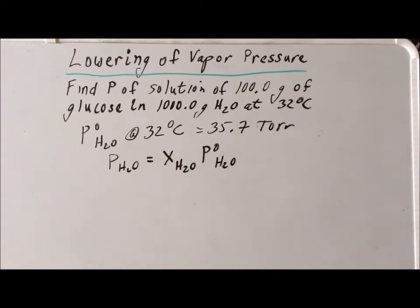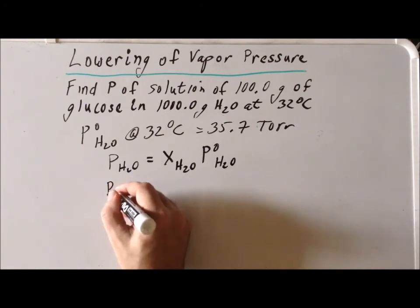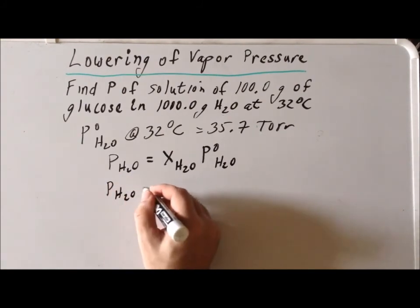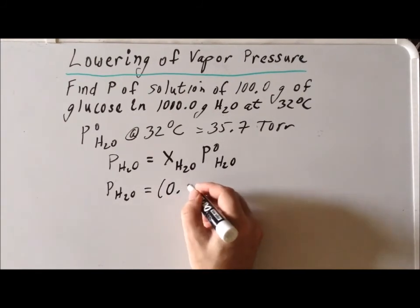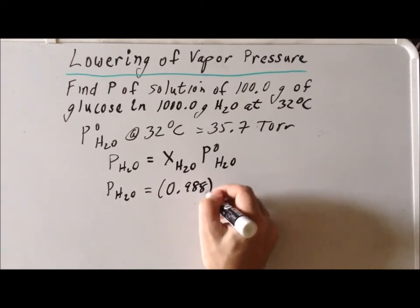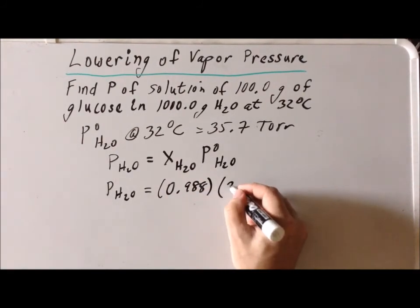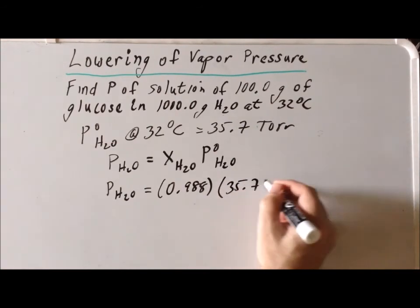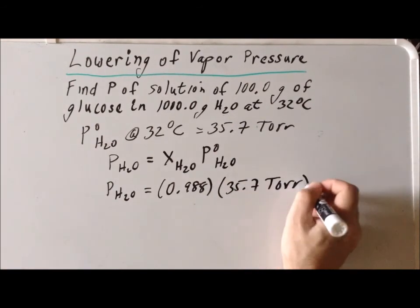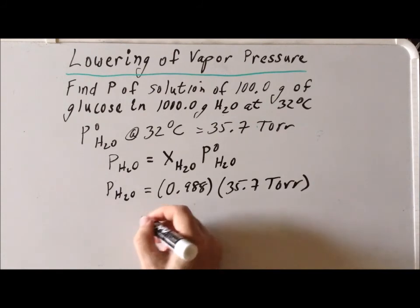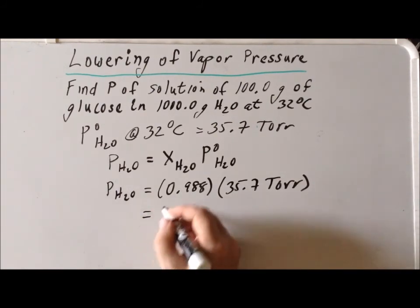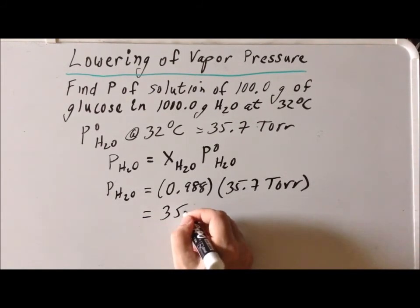If we do that, the vapor pressure of the solution is going to be our mole fraction, which is 0.988, times 35.7 Torr, which is the vapor pressure of pure water at 32 degrees Celsius. We get a value of 35.3 Torr.